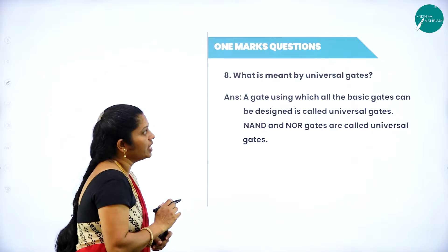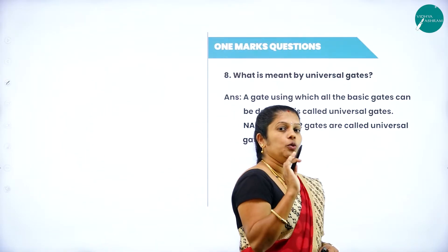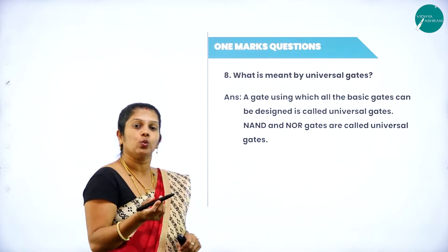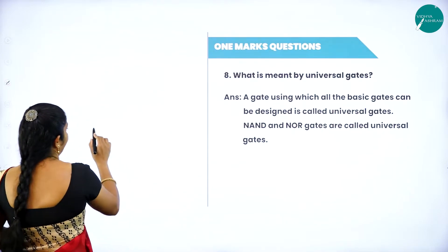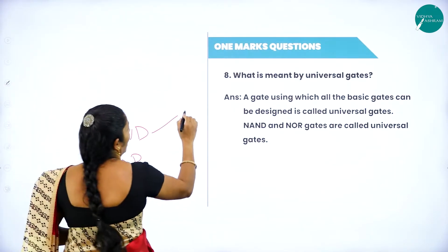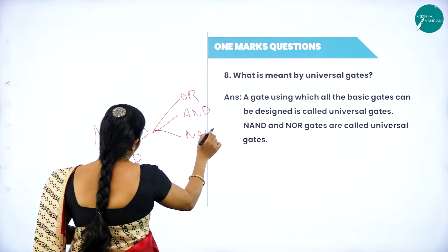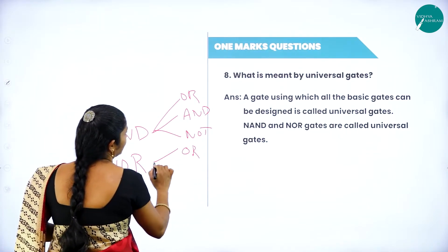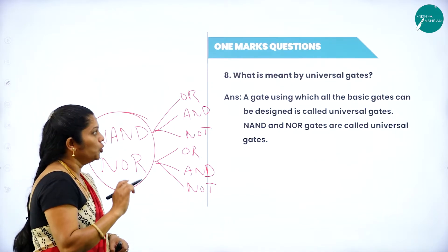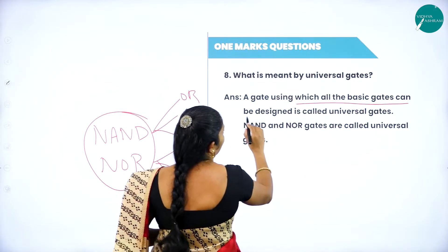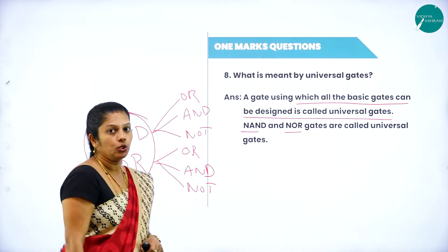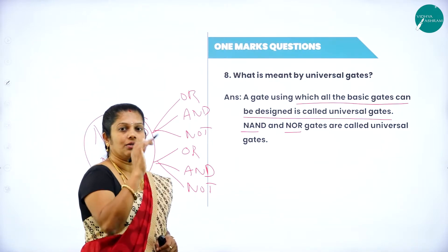What is meant by universal gate? A universal gate is a gate using which all basic gates can be constructed. By using NAND gate as well as NOR gate, we can construct all three basic gates: AND, OR, and NOT. Similarly, by using NOR gate also we can construct OR gate, AND gate, and NOT gate. That is why these two are called universal gates.